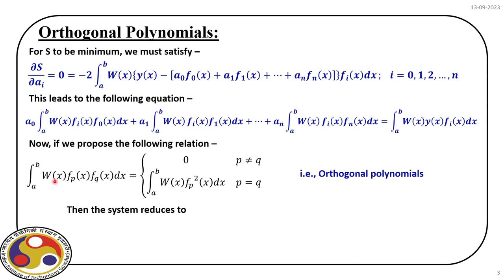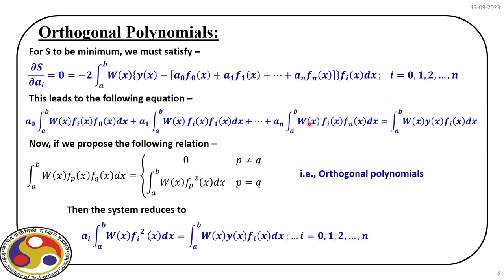The moment we introduce this orthogonality, what happens? When i equals 0, we have a finite integral and all other terms in that equation become 0 due to orthogonality. Similarly, when i equals 1, we have that expression and all other expressions are 0. This system of equations reduces to a very compact form: on the left-hand side we have only aᵢ, which we can directly solve by performing the integral, taking its inverse, and evaluating aᵢ from the right-hand side. A set of linear equations becomes a decoupled system where we independently solve all coefficients. That is the advantage of using orthogonal polynomials.